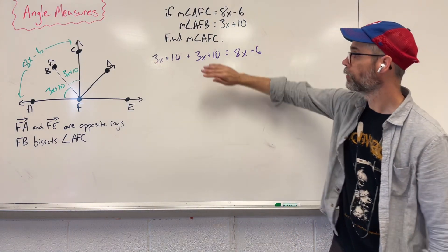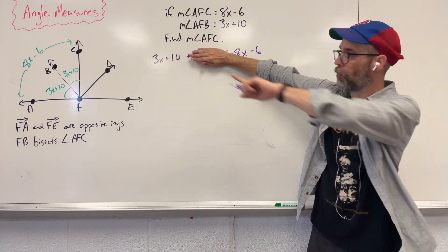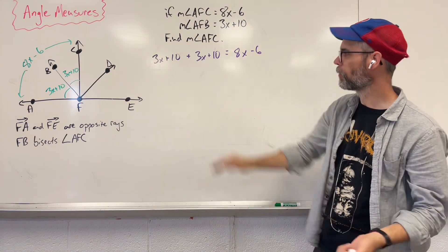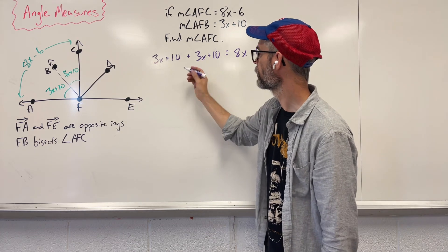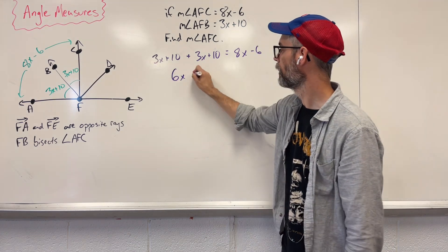You could also do 3X plus 10 in parentheses around that whole group times 2. Same thing. Let's combine like terms. 3X and 3X gives us 6X. 10 and 10 is 20.